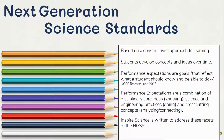Therefore, every standard or performance expectation is written as a goal that reflects what students should know and be able to do. Each performance expectation contains a disciplinary core idea — what the students will know — a science and engineering practice — what the students will do — and a cross-cutting concept, the lens through which students will analyze the phenomenon.